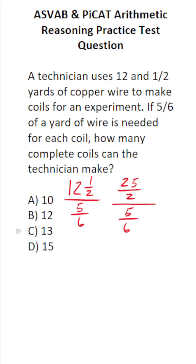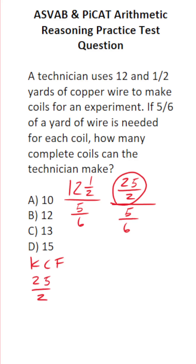How do you divide fractions? When you divide fractions, you follow the algorithm: keep, change, flip. You keep the numerator the same, so we're going to keep 25 over 2 the same. We're going to change from division to multiplication. And then we flip this bottom fraction, so instead of being 5 over 6, it's going to be 6 over 5.